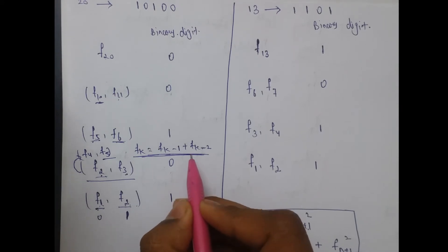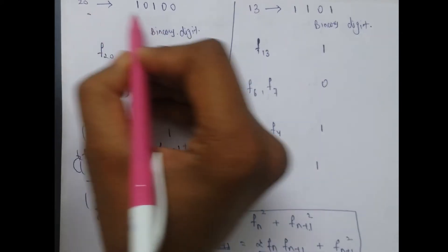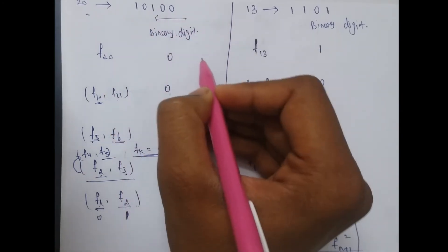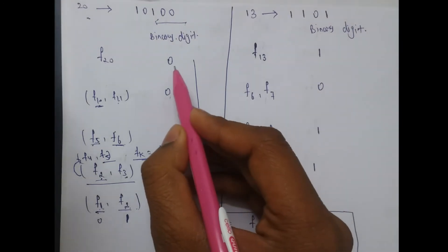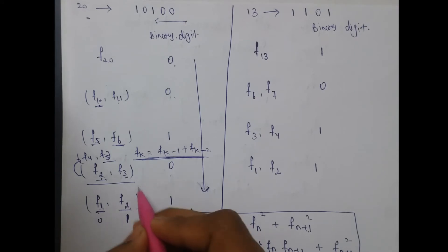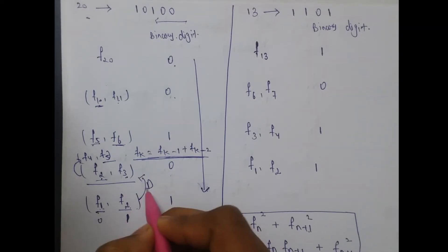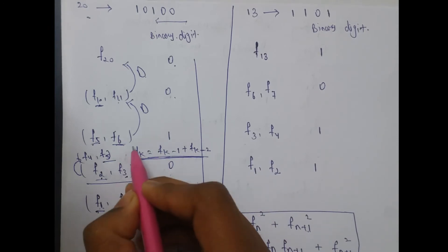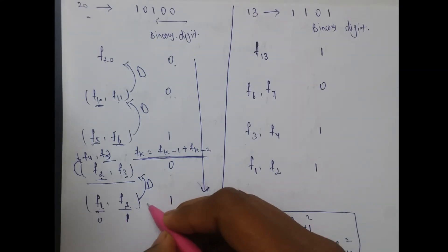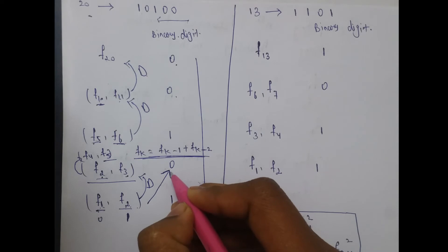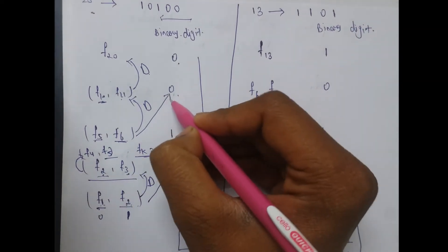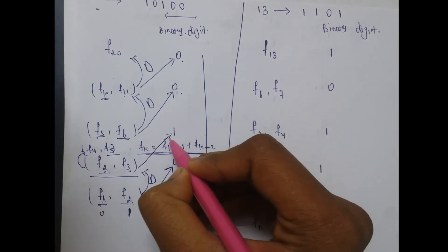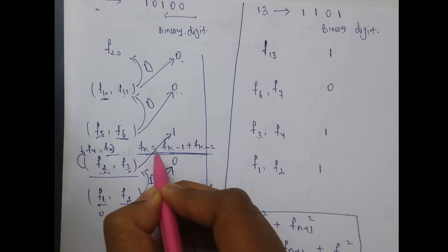To solve this problem we use the binary representation of the given number. The binary representation of 20 is 10100. I have written this binary representation from left to right as top to down: first digit, second, third, fourth, and fifth. We can observe that whenever the next binary digit is 0 we can directly calculate using the doubling method, but whenever the binary digit is 1 we apply the standard method to calculate the next Fibonacci number.